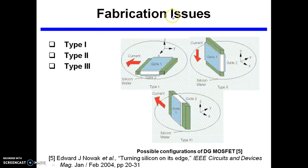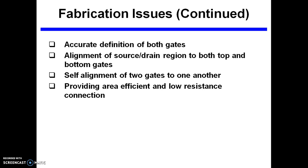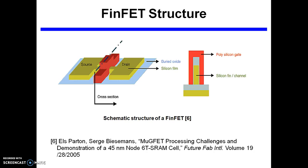Various fabrication types are available depending upon the orientation of current: Type 1, Type 2, and Type 3 double gate MOSFETs. However, there are fabrication issues — accurate alignment of both gates is a difficult issue, alignment of source and drain regions to both top and bottom gates becomes a difficult task, self-alignment of two gates to one another is another major problem, and providing an area-efficient, low-resistance connection from the top gate to the bottom gate is also difficult.